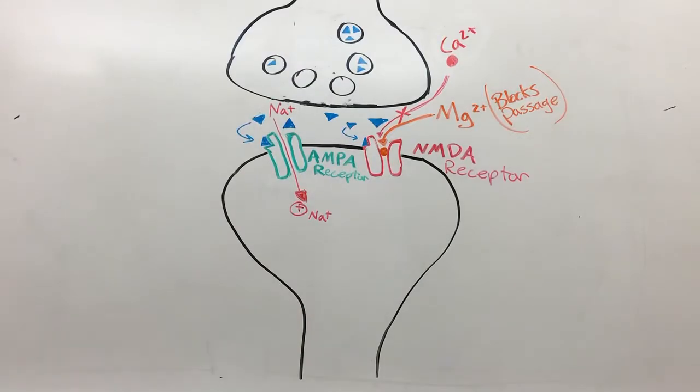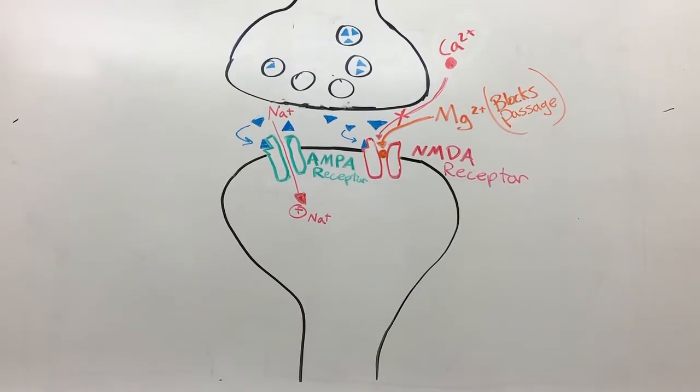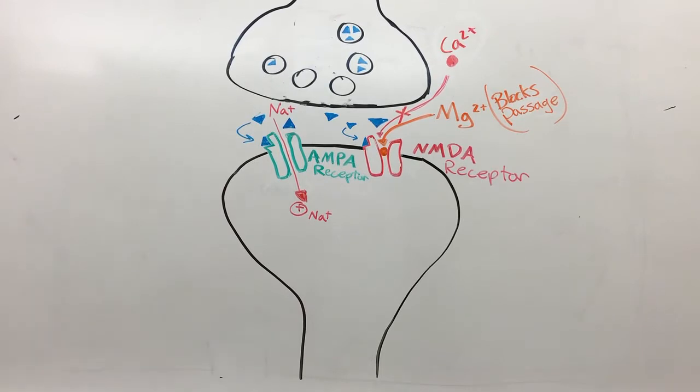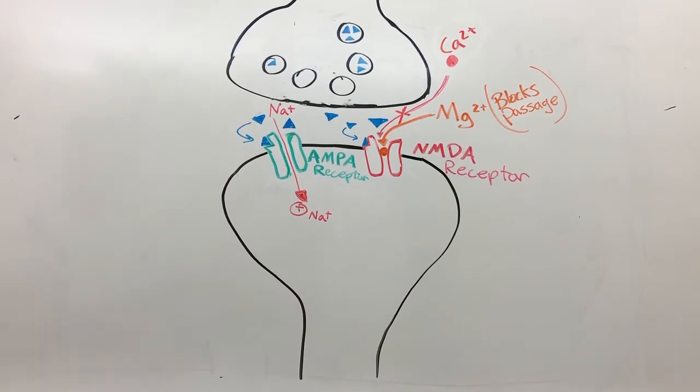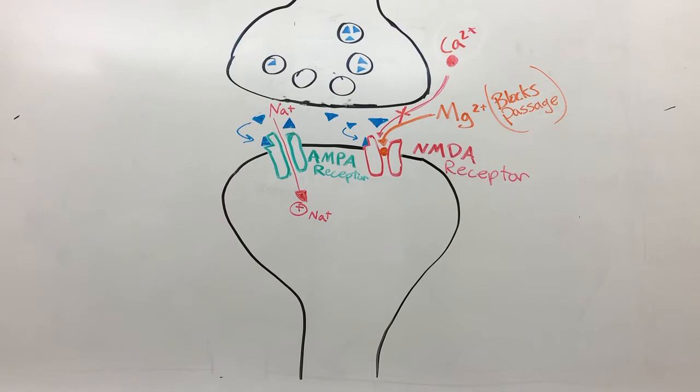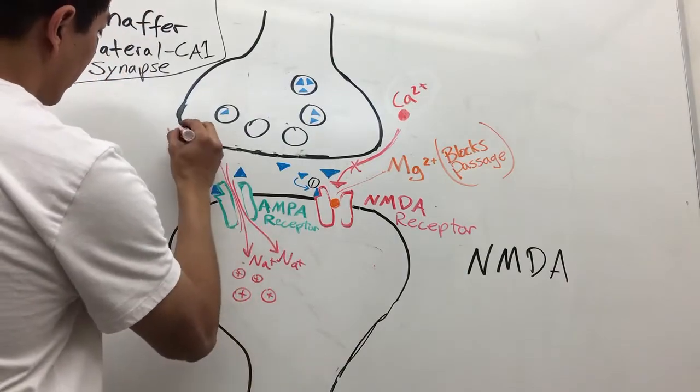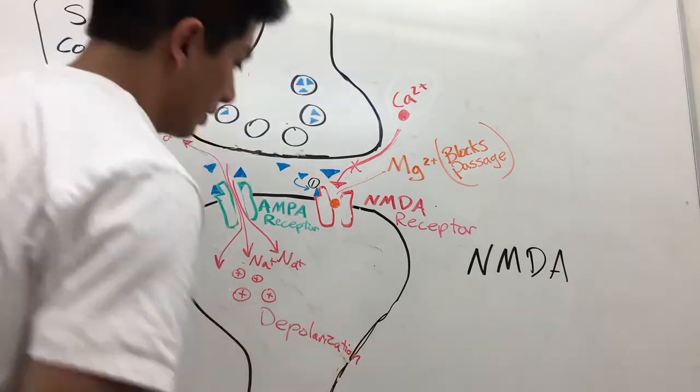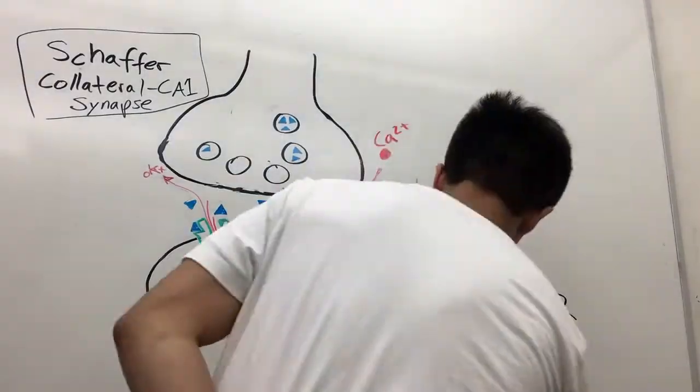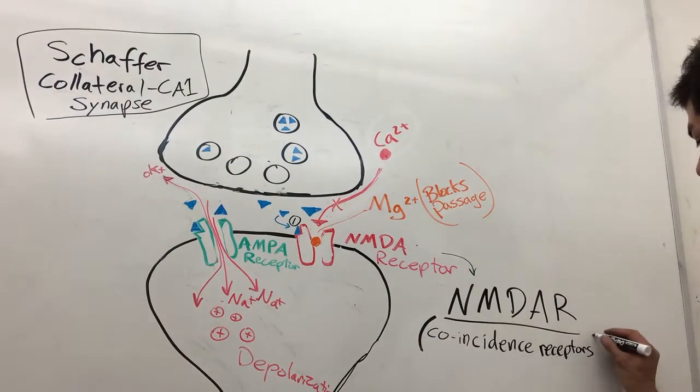The NMDA receptor is blocked with a magnesium ion, and because of that blockage, calcium cannot enter in. The reason why it's so important for calcium to enter is because that's what's going to start a cascade for changes in the postsynaptic neuron so we can get long-term potentiation. Calcium will act as a second messenger.